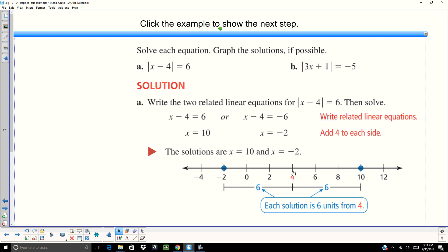And if you look at 4 on your number line, if you go to the right 6, that equals 10. If you go to the left 6, that equals negative 2. Each solution is 6 units from 4.